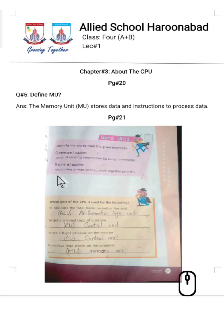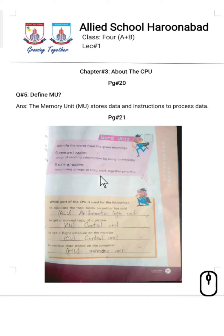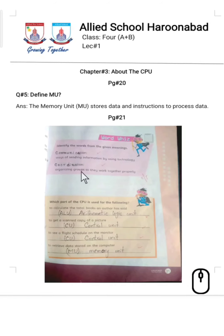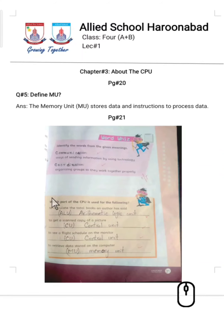The next one is: organizing groups so they work together properly — groups ko is tarah se organize karna ke wo properly work kar sake, like coordinate kar sake ek doosre ke sath. So the word here is 'coordination' — c-o-o-r-d-i-n-a-t-i-o-n.